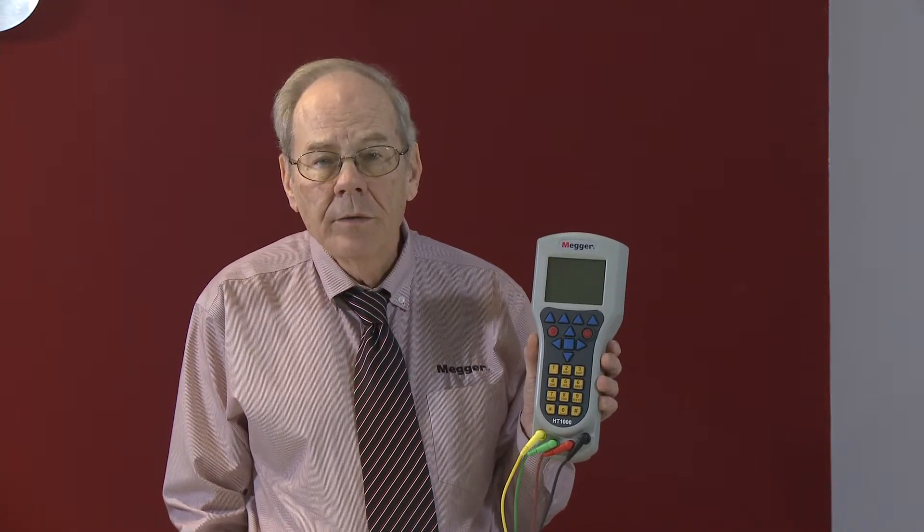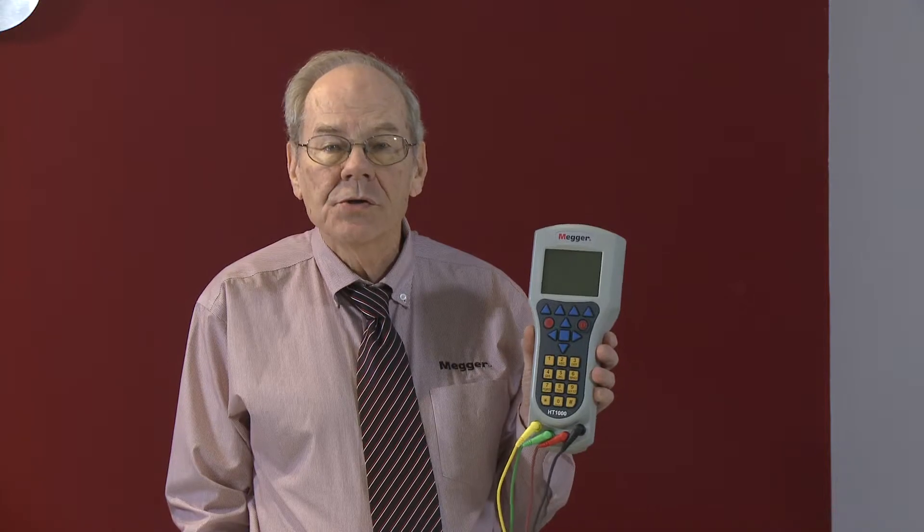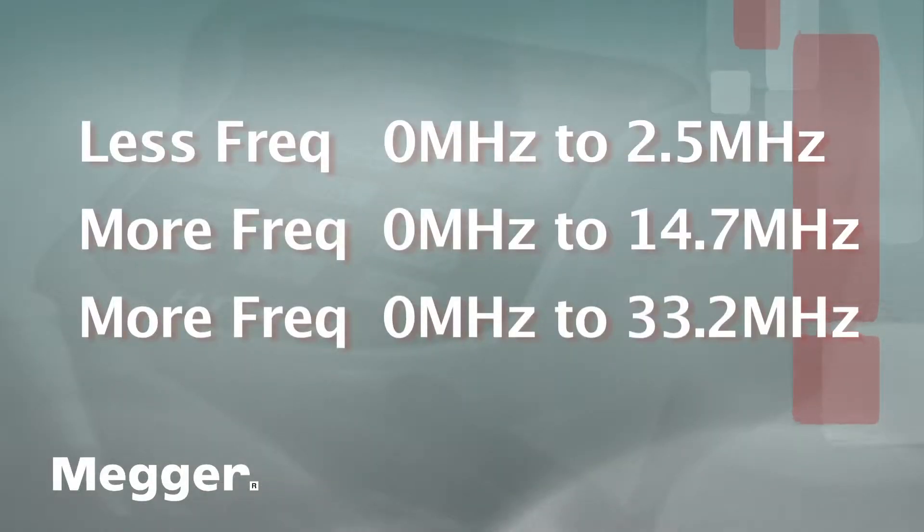In receive mode, three frequency ranges can be scanned. Initial screen, 0 MHz to 2.5 MHz. More frequency, 0 MHz to 14.7 MHz. More frequency, 0 MHz to 33.2 MHz.